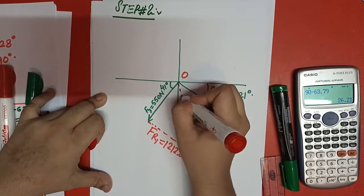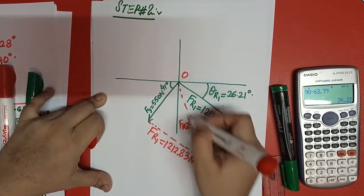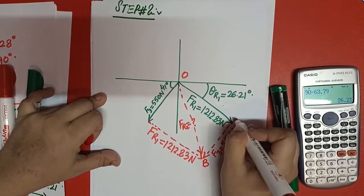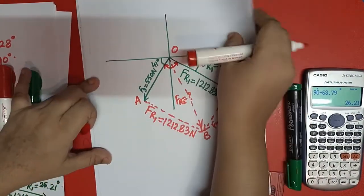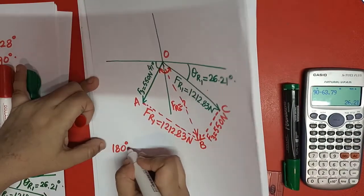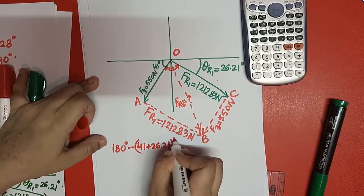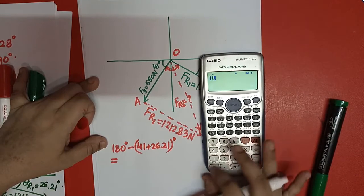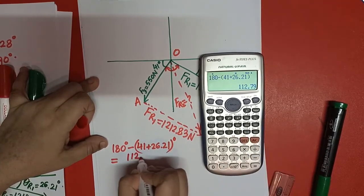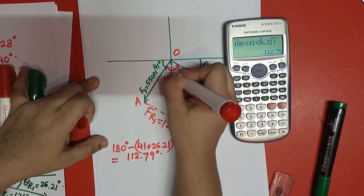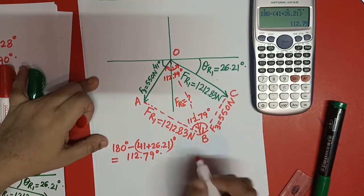We draw imaginary FR2, with vertices O, A, B, and C. To find the interior angle: 180 − (41 + 26.21) = 180 − 67.21 = 112.79 degrees. So alpha 2 = 112.79 degrees on both opposite sides of the parallelogram.